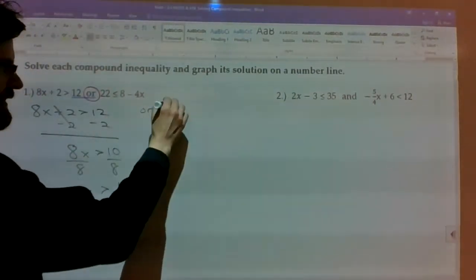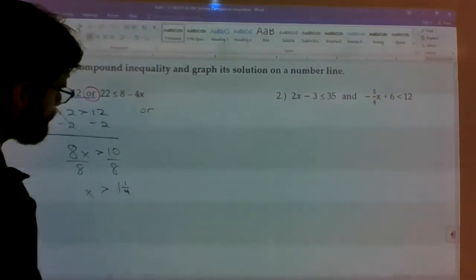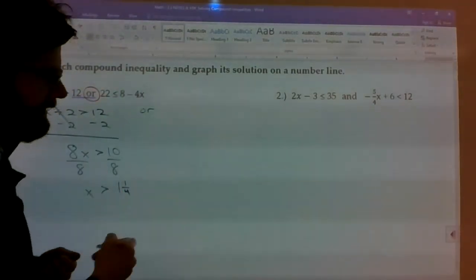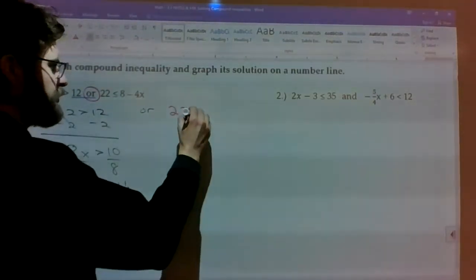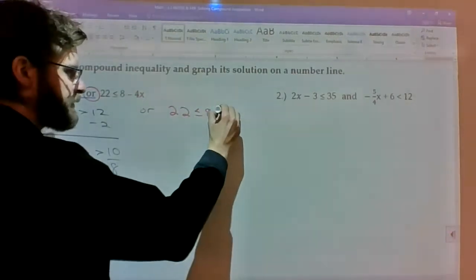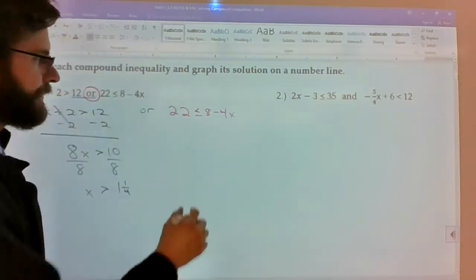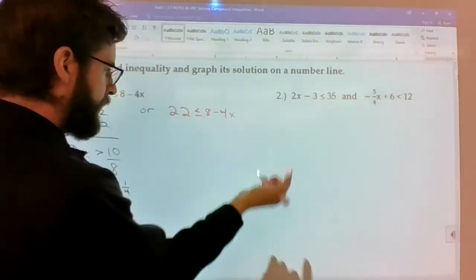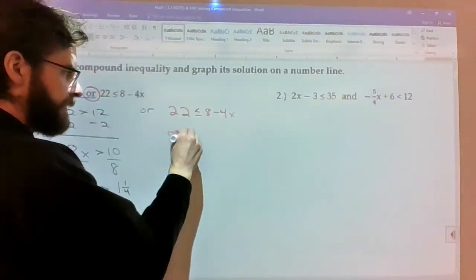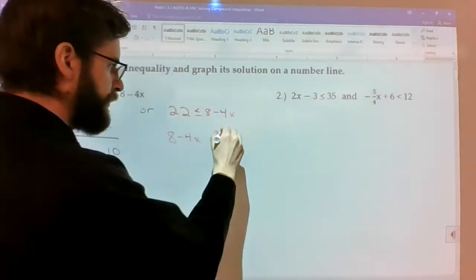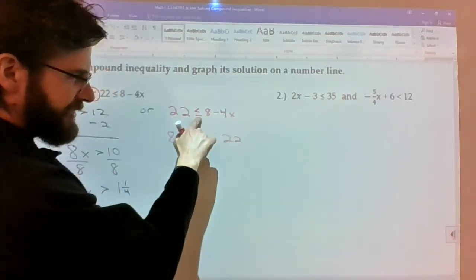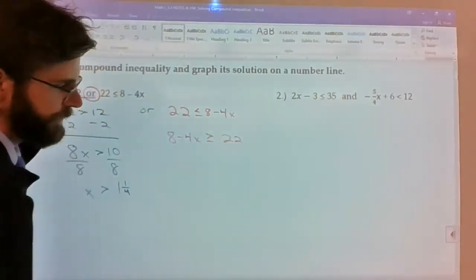The next is, you know what, I'll do it in a different color so we can see it clearly. 22 is less than or equal to 8 minus 4x. I instantly see the x on the right-hand side. I'm going to do a rewrite. I'm going to say 8 minus 4x on the left, 22 on the right, and then flip this from less than or equal to to greater than or equal to.